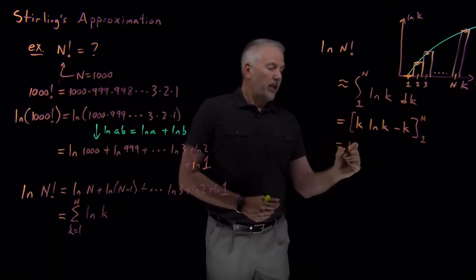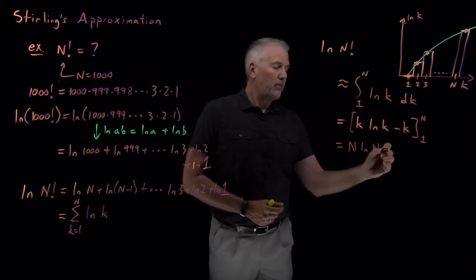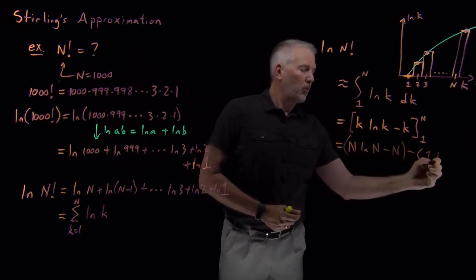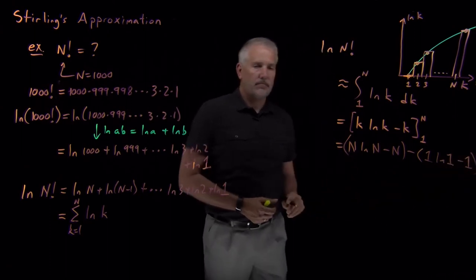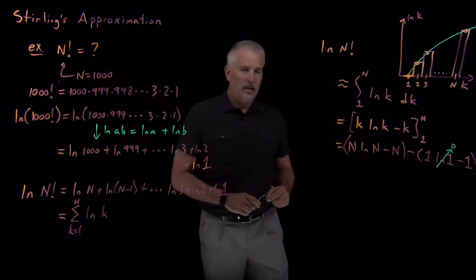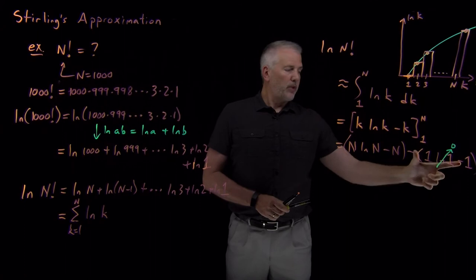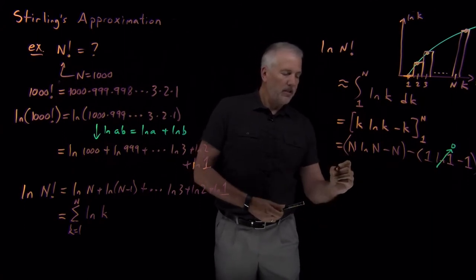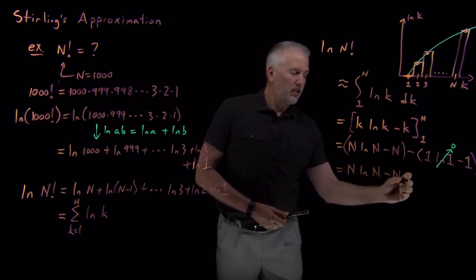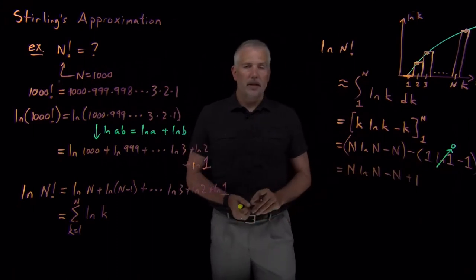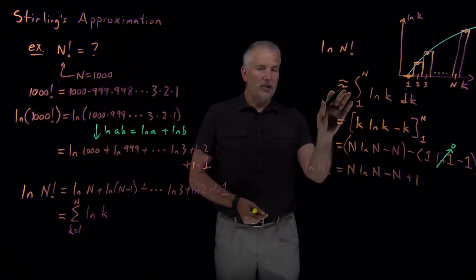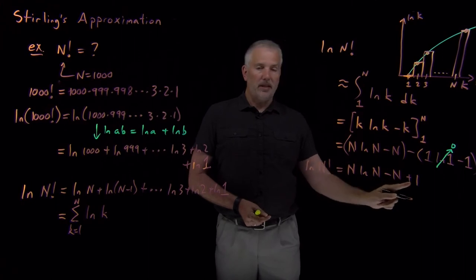I want to evaluate that in this definite integral between 1 and n. So plug in capital N: I've got n log n minus n. And from that, I subtract 1 log 1 minus 1. The logarithm of 1 is 0, so that term goes away. This minus 1 term doesn't go away. There's two negative signs. So my end result is that this is equal to n log n minus n plus 1. So the log of n factorial is approximately equal to n times the log of n minus n plus 1.